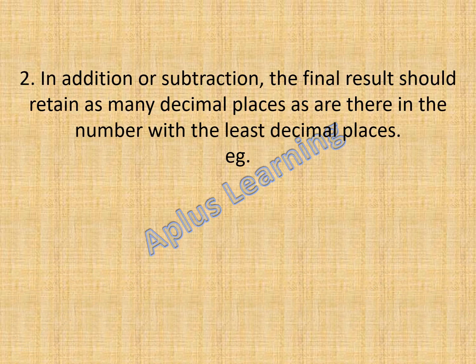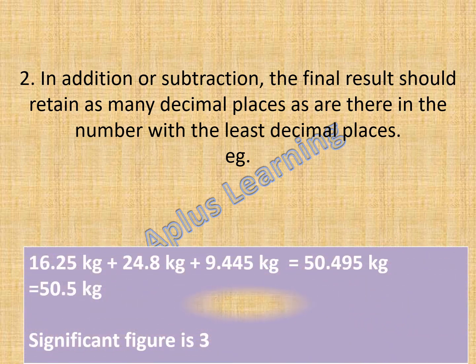In addition or subtraction, the final result should retain as many decimal places as are in the number with the least decimal places. Here we have 16.25 kg plus 24.8 kg plus 9.445 kg. The answer comes out to be 50.495, and when rounded we get 50.5. The decimal place in the answer should match the number with the least decimal places in the question. Here, the significant figure is 3.